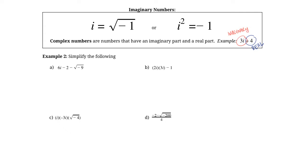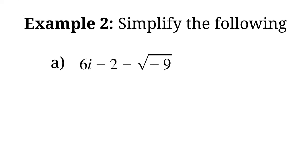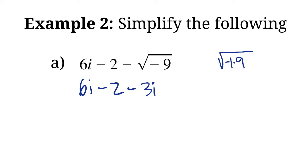Let's see how some of that algebra works with imaginary numbers. Looking at the first one: 6i minus 2 minus the square root of negative 9. We can't simplify 6i minus 2 directly, but the square root of negative 9 can be written as the square root of negative 1 times 9, which gives us 3i. So we have 6i minus 3i, leaving us with 3i minus 2. This is a complex number because it contains both a real part and an imaginary part.